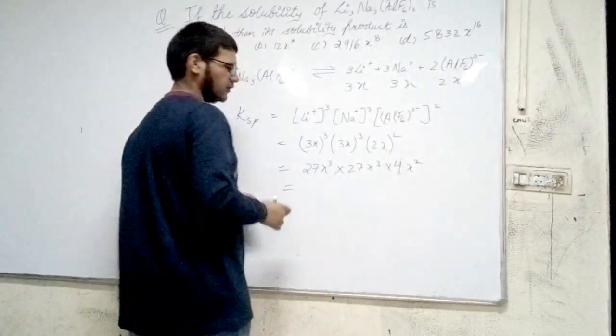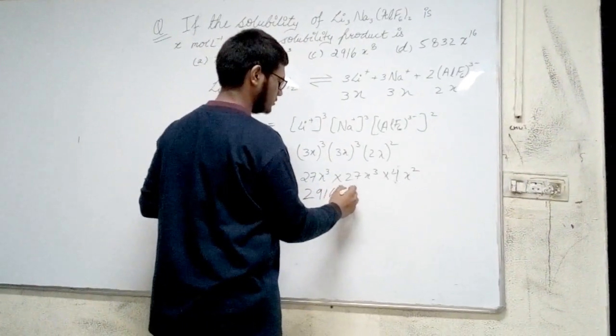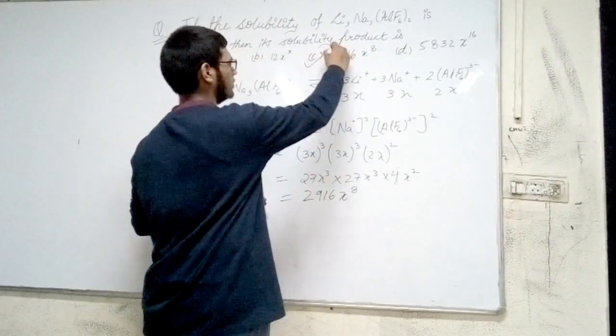So after solving this, we get 2916 x^8. So option C is correct.